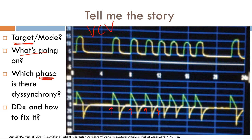What's the differential for extra triggering? The trigger threshold may be set too low. There might be cardiac oscillations, peristalsis, leaking in the circuit, or condensation in the tubing — all secondary to extra-pulmonary causes. To fix it, we want to increase the trigger threshold to minimize extra triggering.